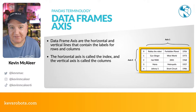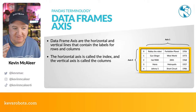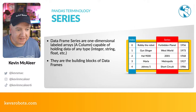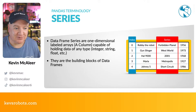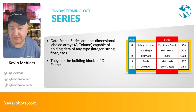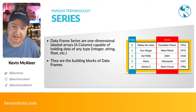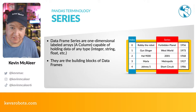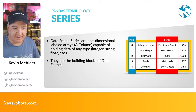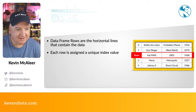A data frame is akin to a spreadsheet or an SQL table. The axes represent the rows and columns: the horizontal axis is called the index and the vertical axis is the columns. The series is essentially columns of data — one-dimensional labeled arrays that typically hold integers, strings, floats, and so on. For efficiency you want to tell Python what kind of data is in each column so it can use less memory. Series are the building blocks of data frames.